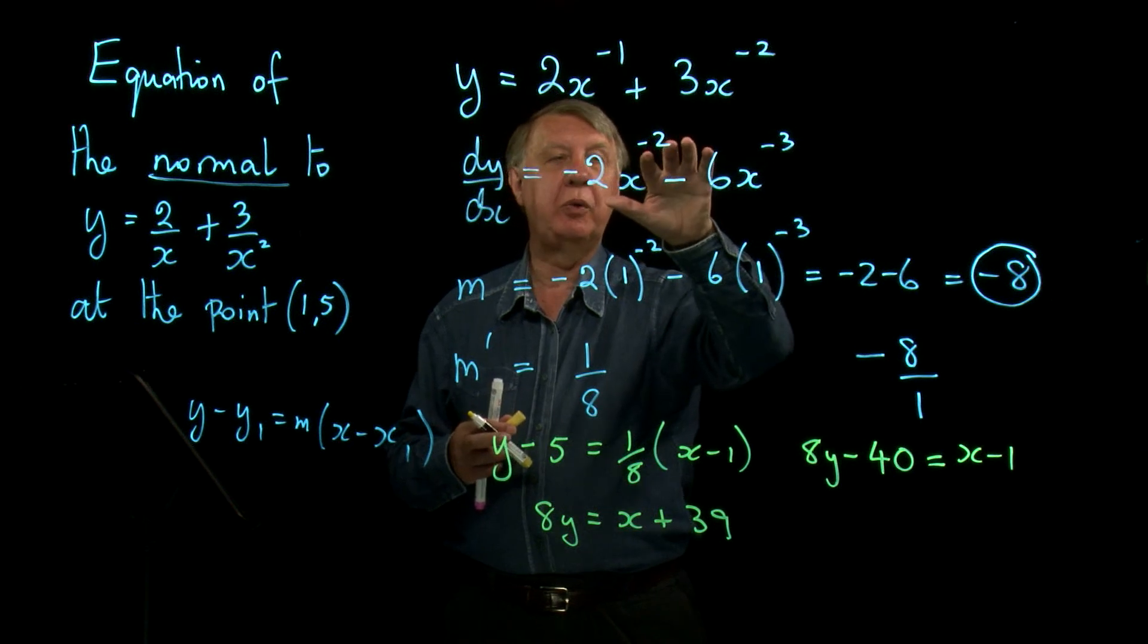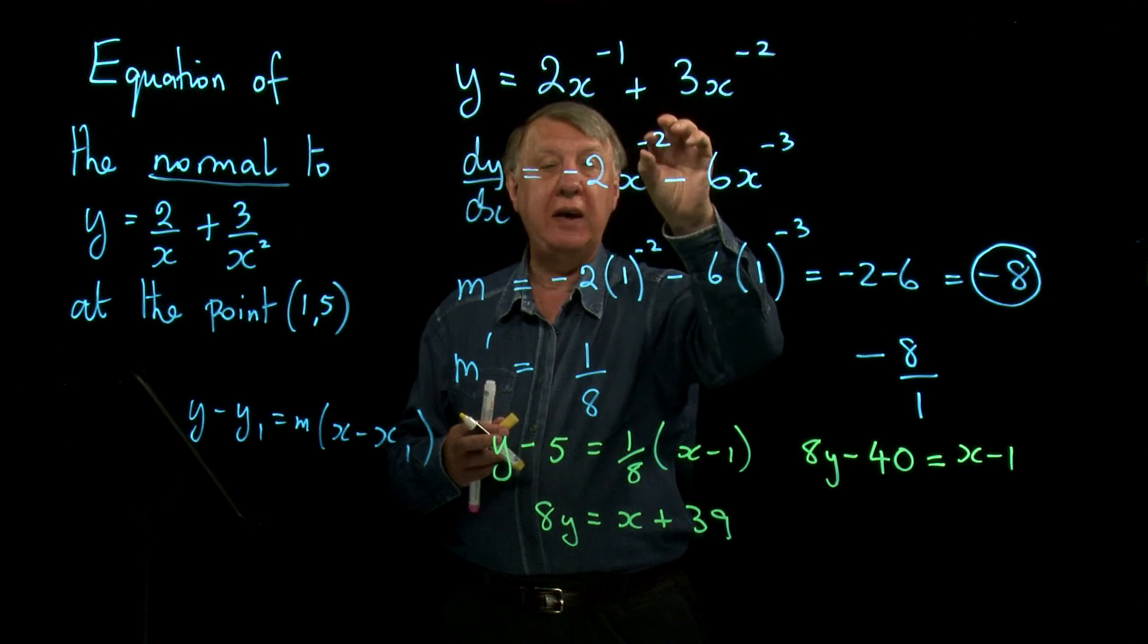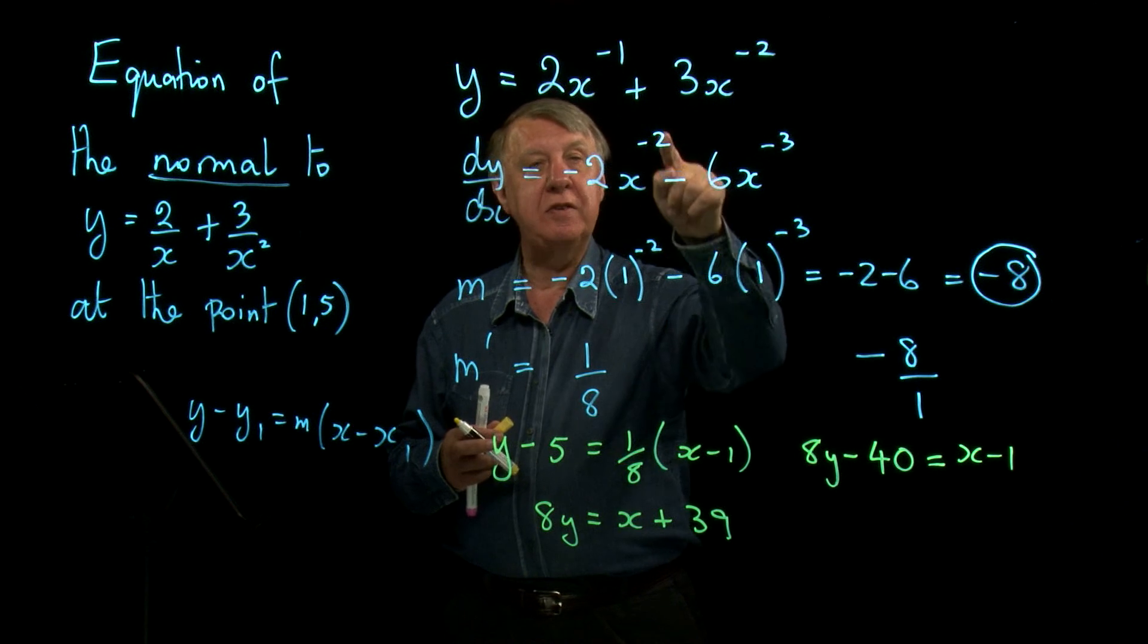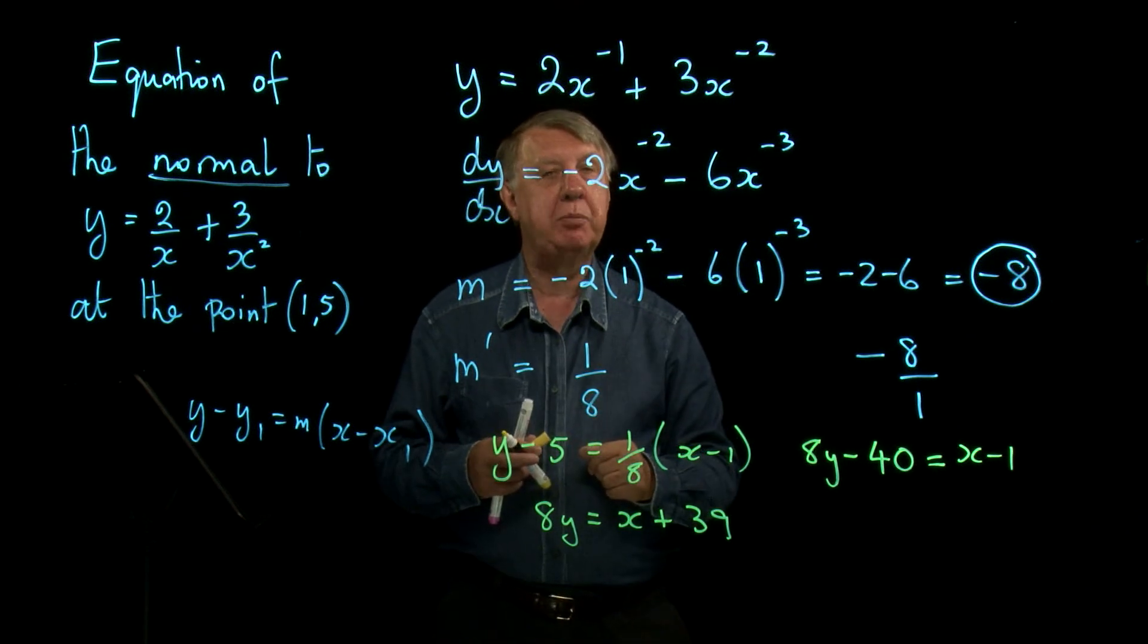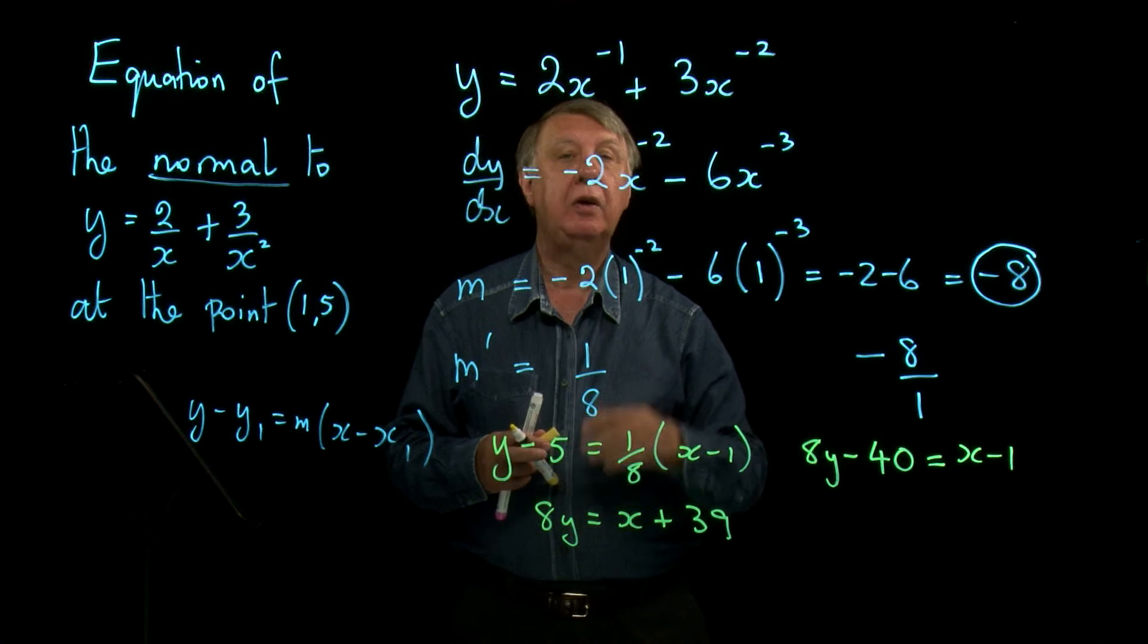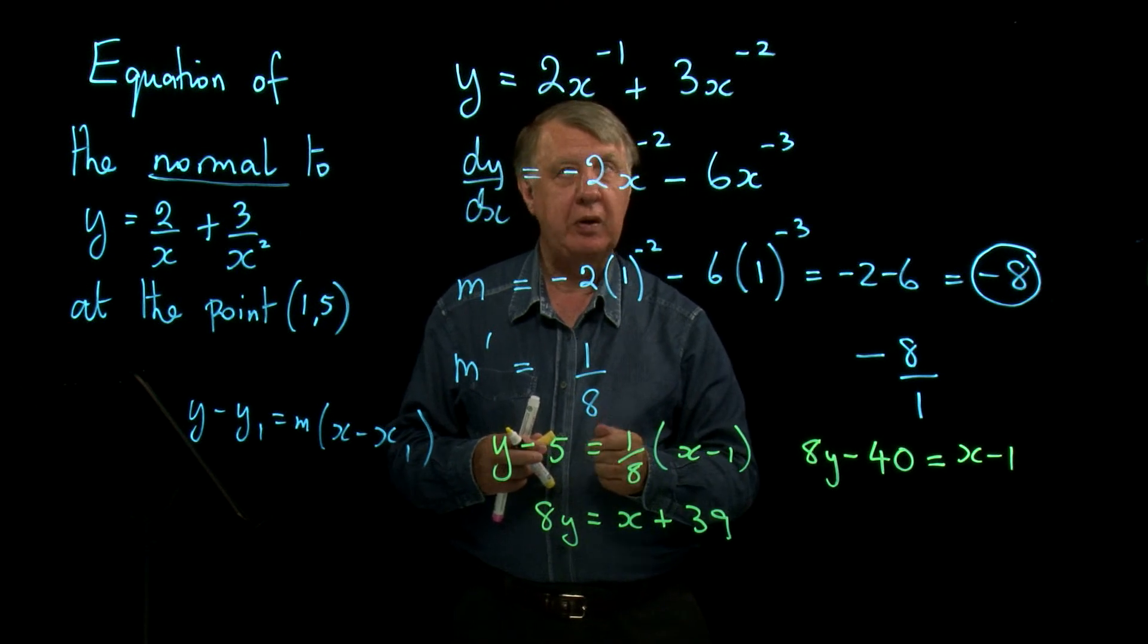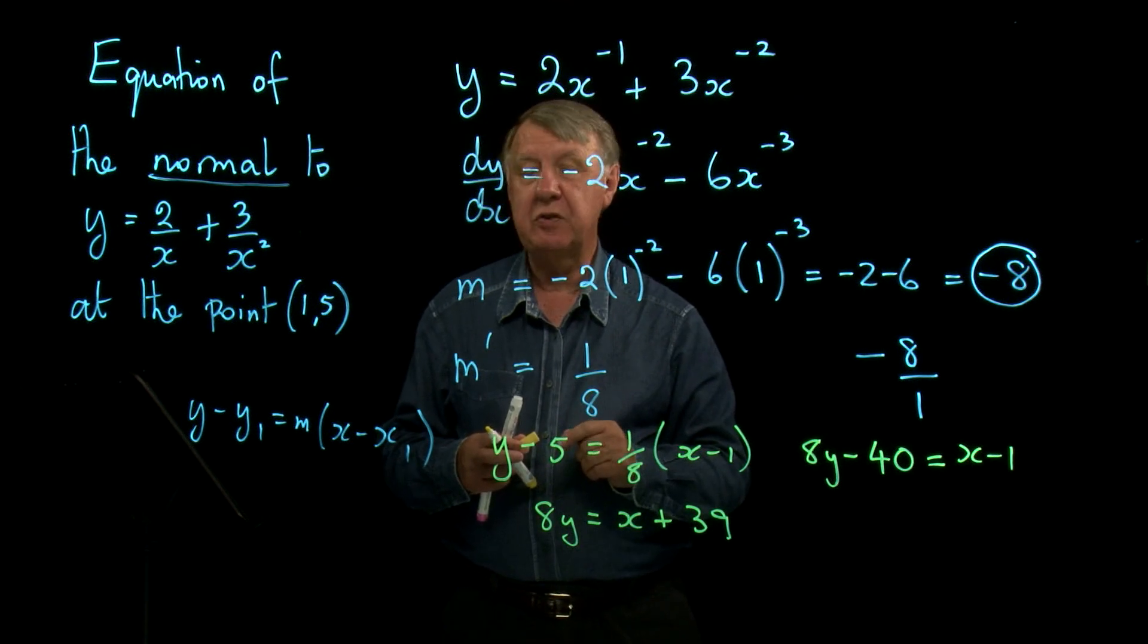Make sure that when you take away from a negative number, it gets more negative. Make sure when you substitute a value into a negative power that you put the bracket round that number. And be careful when the gradient is an integer and you want the perpendicular gradient to that as well. So several problems here that are quite difficult within this one question.